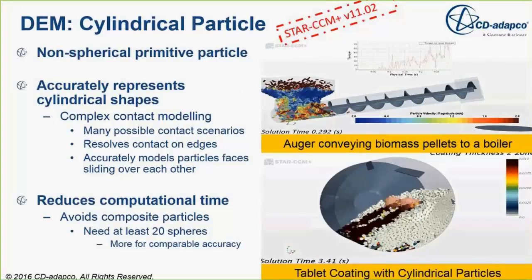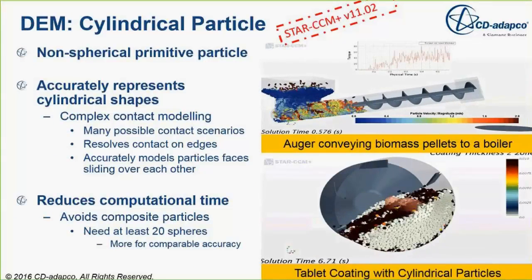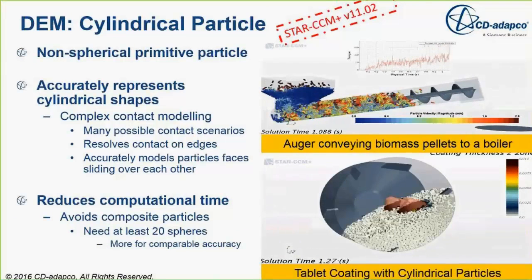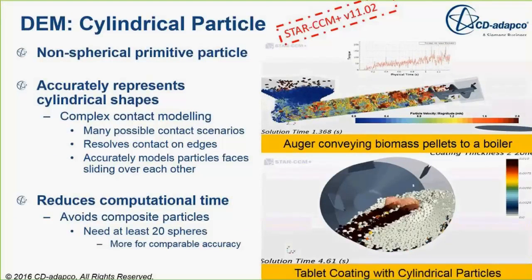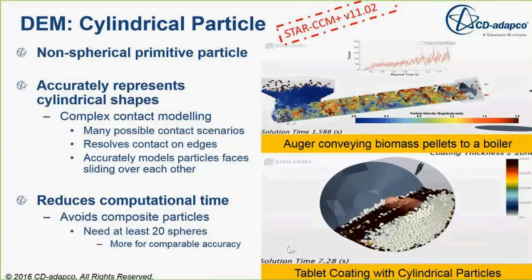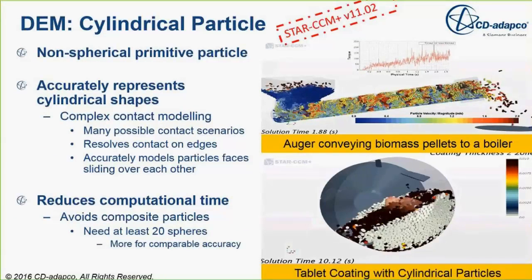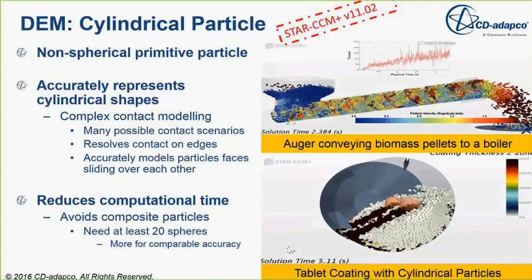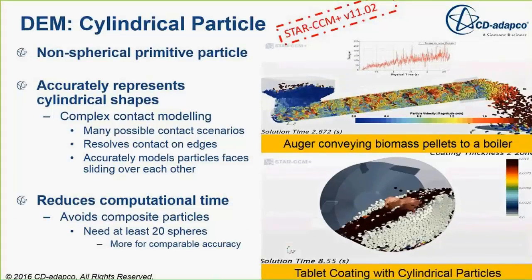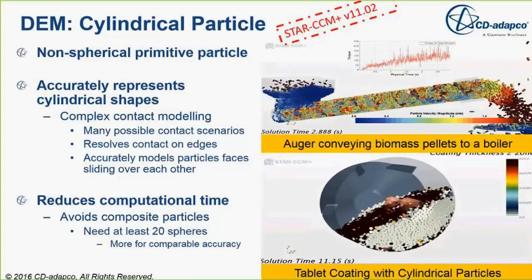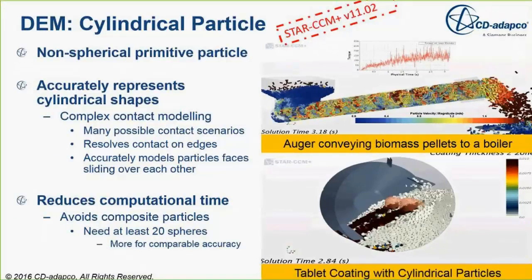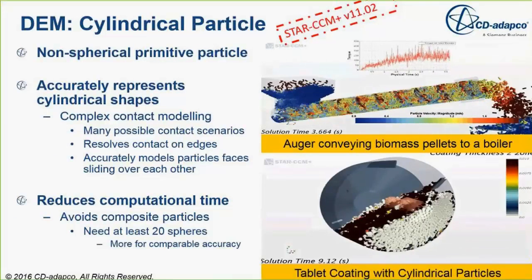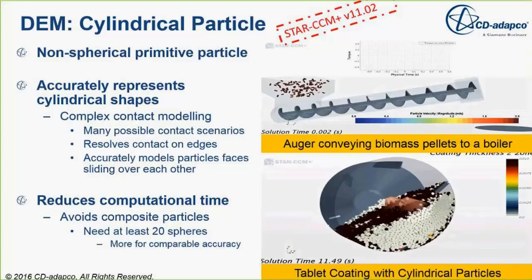In the latest version of the code, a cylindrical particle type has been introduced. Cylindrical particles are very commonly used in a variety of applications. Previously, creating a cylindrical particle required assembling many spherical particles, but this new capability greatly reduces computation time. Two examples include an auger conveying biomass pellets to a boiler, and a tablet coating problem in the pharmaceutical industry involving cylindrical particles.